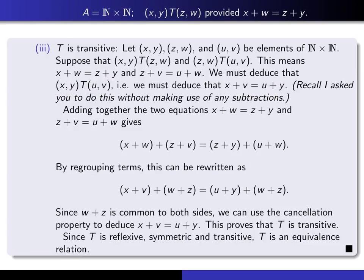Adding together the two equations x + w = z + y and z + v = u + w gives (x + w) + (z + v) = (z + y) + (u + w). By regrouping terms, this can be rewritten as (x + v) + (w + z) = (u + y) + (w + z). Since w + z is common to both sides, we can use the cancellation property to deduce x + v = u + y. This proves that T is transitive.